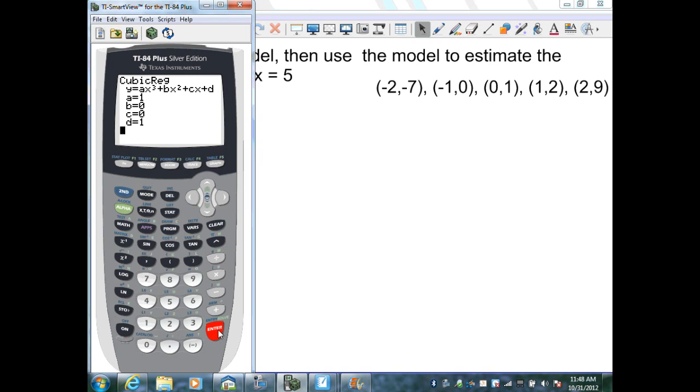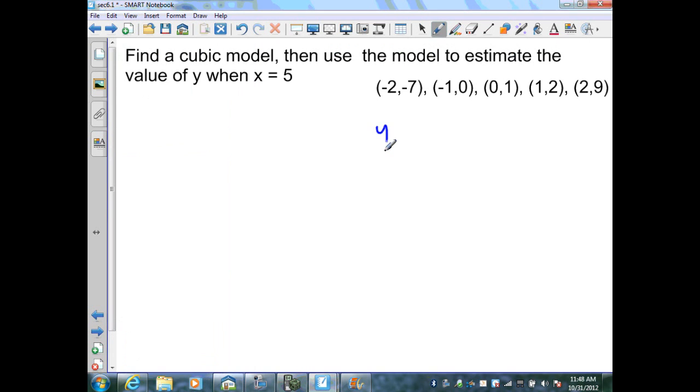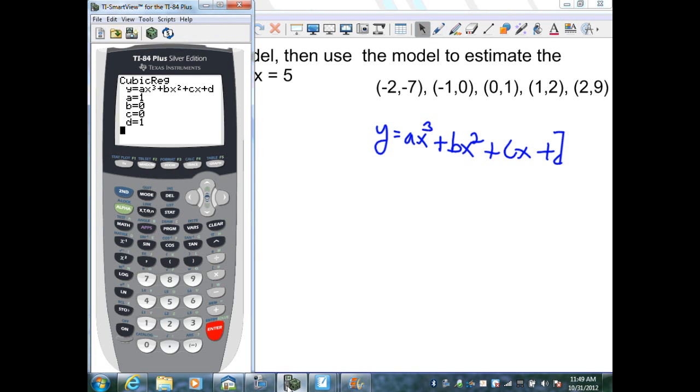And now, I can see that my model is ax cubed plus bx squared plus cx plus d. So, I can write that. And when I go back to the model, it's telling me my model is a is 1, b is 0, c is 0, and d is 1.